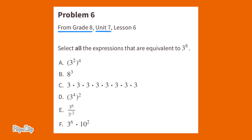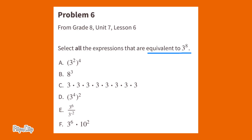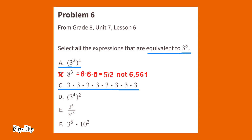Number 6, from 8th Grade, Unit 7, Lesson 6. Select all the expressions that are equivalent to 3 to the power of 8. A: 3 squared to the power of 4 — this is equivalent to 3 to the power of 8. B: 8 to the power of 3 is 8 times 8 times 8, which equals 512, not 6,561, which is what 3 to the power of 8 equals. C: 3 times 3 times 3 times 3 times 3 times 3 times 3 times 3 is 3 to the power of 8, equal to 6,561.